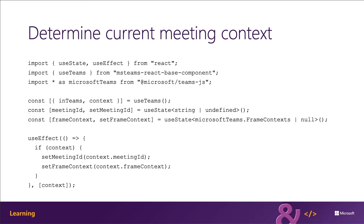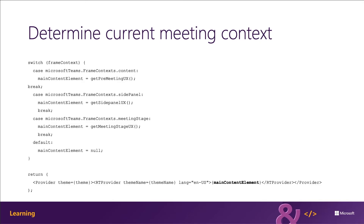I'm using the standard React hooks Use State and Use Effect, plus a custom hook called Use Teams to set my state. I've got a property called is in Teams, and I'm also getting the context, a meeting ID, and the frame context. The frame context tells me where I am in Microsoft Teams. Using Use Effect, I can execute whenever the context object is set by my Use Teams hook. When the context property changes, the Use Effect hook fires, I check if context is defined, then get the meeting ID and frame context and set those two state values. My meeting app can then use the frame context state object to conditionally return different user experiences based on where the tab is loaded.